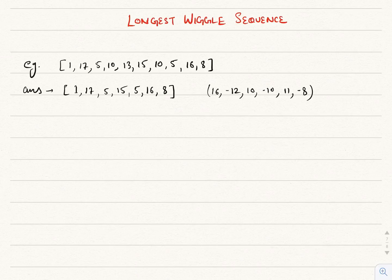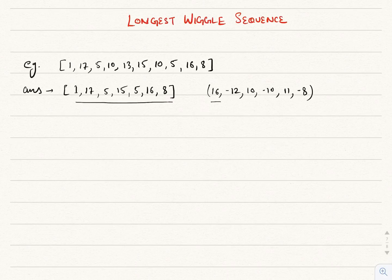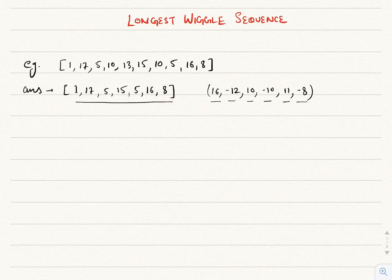For the given example, one of the longest wiggle sequences has length 7. As you can see, the differences between elements alternate: positive, then negative, then positive, then negative, then positive, then negative. Make sure it should be strictly positive and negative. A sequence with fewer than two elements is trivially a wiggle sequence.